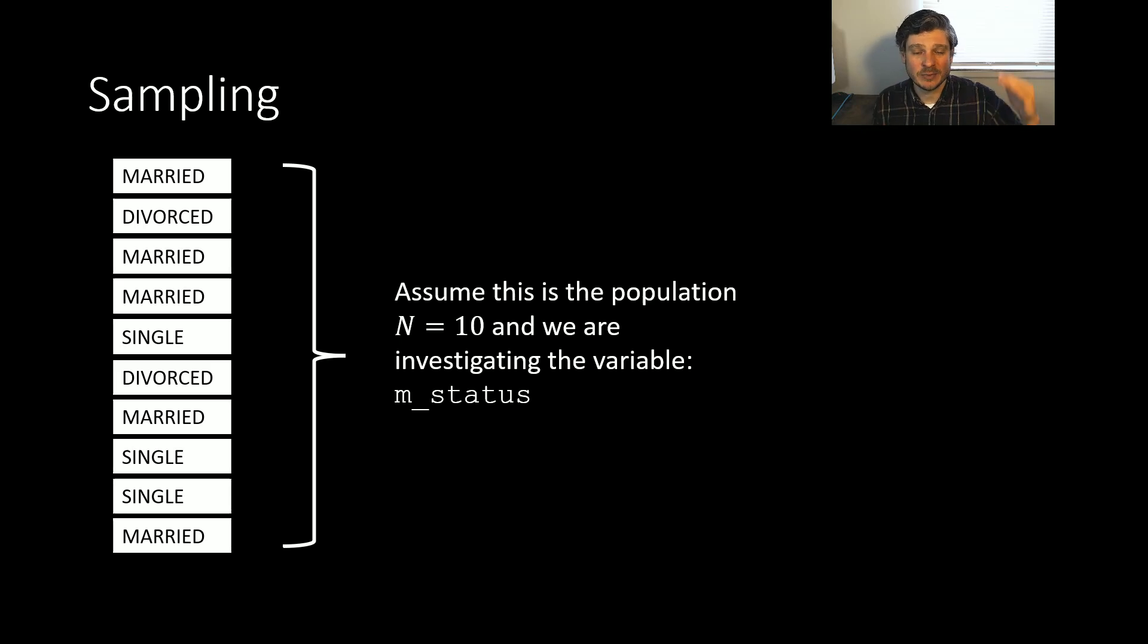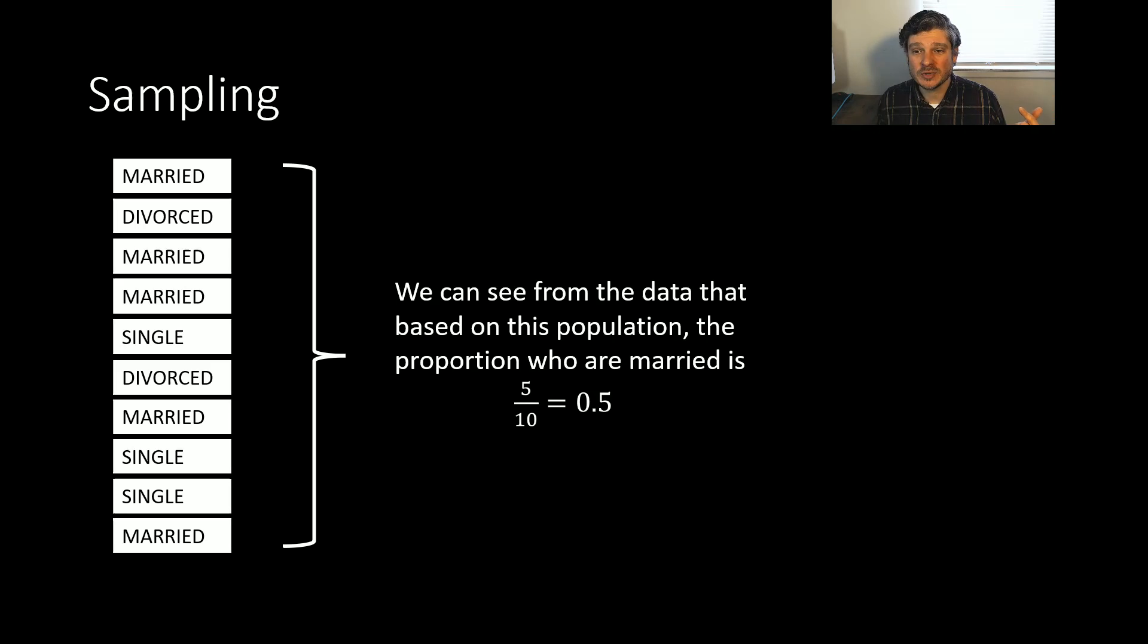So yeah, we can see that we have this variable where you're either married, divorced, or single. And we're going to assume that this is our entire population. This is all of our data. But the question becomes, well, I know that based on this data, half the people in my data set are married, right? Five out of the 10, really easy to find that proportion.